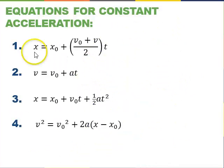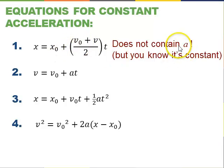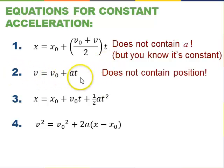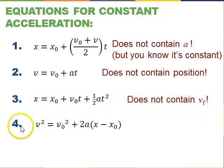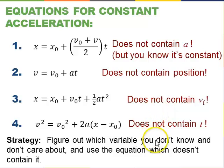To recap, here are the four equations for constant acceleration. Each equation is missing one of the main variables: equation 1 does not contain acceleration a (though we must still know acceleration is constant, otherwise v-bar wouldn't be the average velocity); equation 2 does not contain position x; equation 3 does not contain final velocity v; equation 4 does not contain time. Your strategy is to identify which variable you don't know and don't need, then use the equation that doesn't contain it.